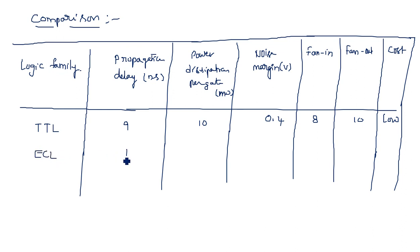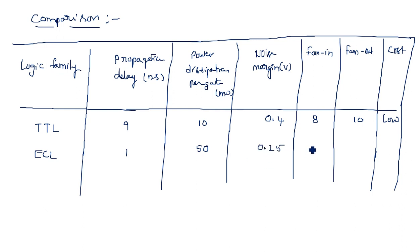The Emitter Coupled Logic family has a propagation delay of 1 nanosecond and power dissipation of 50 milliwatts. The delay is only 1 nanosecond compared to TTL's 9 nanoseconds, making it the fastest, but power dissipation per gate is very high. Noise margin is 0.25 volts, fan-out is 10, and cost is also high. High power dissipation and high cost are its drawbacks.